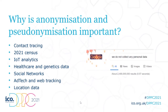Anonymization and pseudonymization crop up frequently in the media, particularly in the last 12 months with the COVID-19 pandemic — for example, the contact tracing app was considered anonymous. The 2021 census statistics also need to be anonymized, as do IoT analytics from wearable and smart home devices, and healthcare data shared between GPs and hospitals. However, there is often confusion between terms like anonymization and pseudonymization.